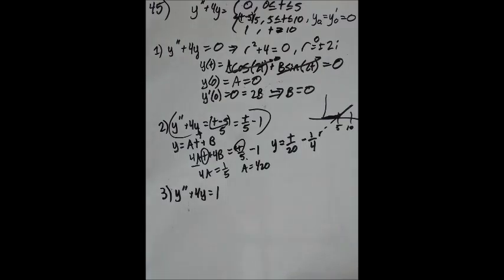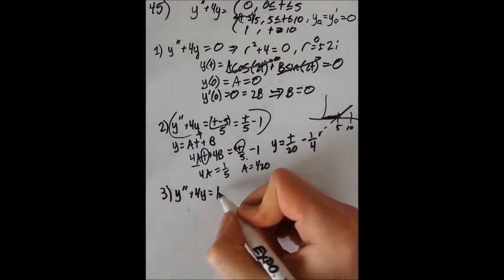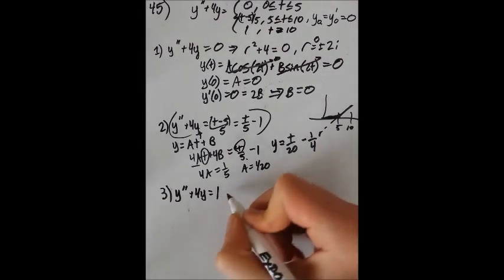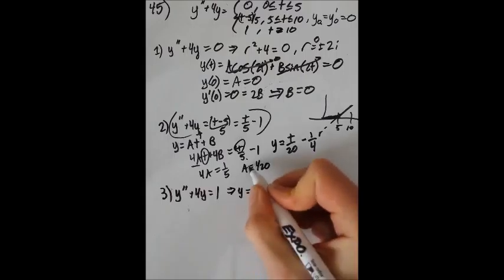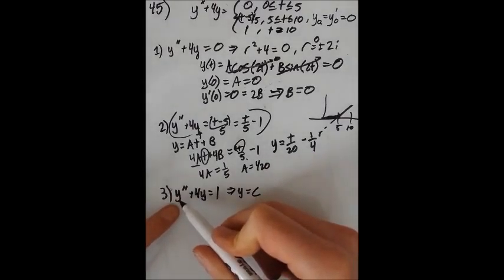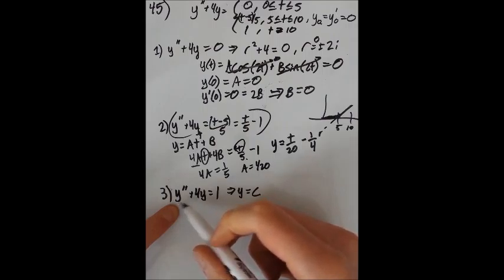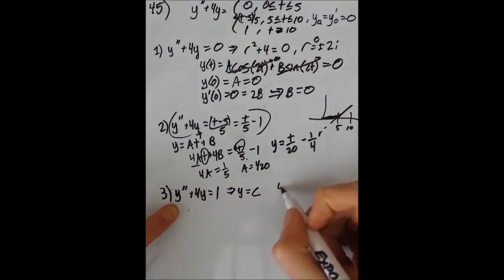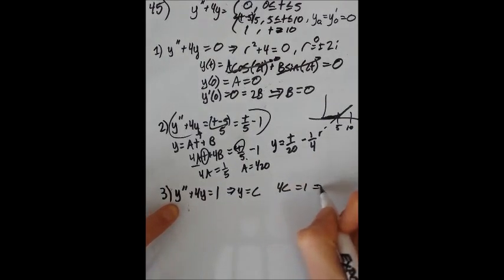So we're going to do the exact same methodology here with undetermined coefficients. We have just a constant here. So we're going to assume that y equals a. Different a than up here. Just to be clear, we'll make it c. Plugging in, it's really obvious. The second derivative goes to 0. So 4c equals 1, c is 1 fourth.